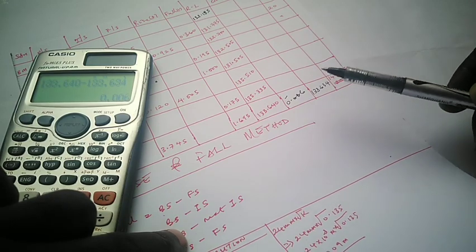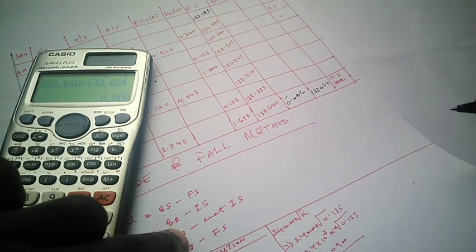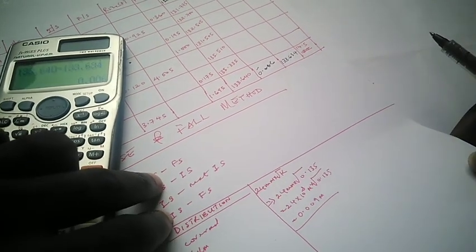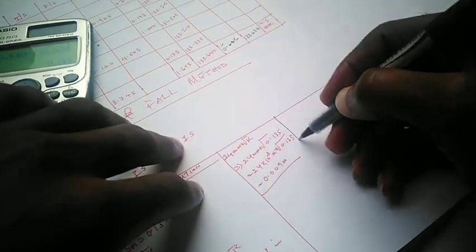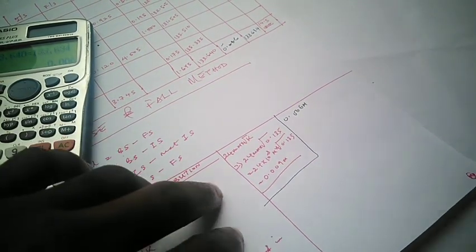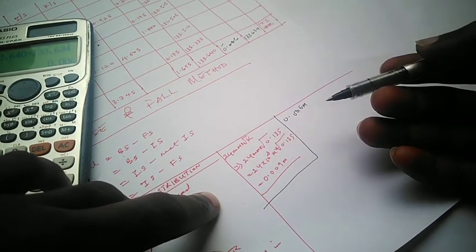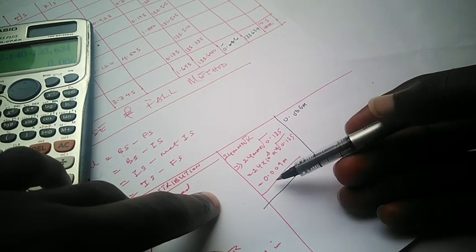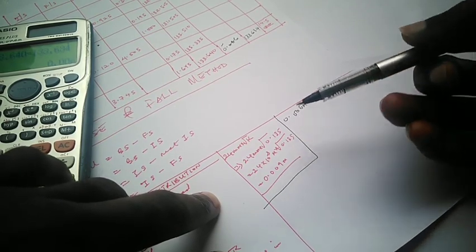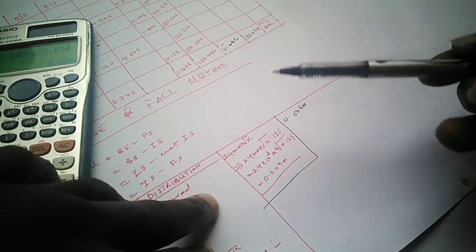Having established that, the next thing is to know how to distribute this misclosure across the stations. We already know our misclosure for this particular leveling exercise is 0.006 meters. The reliable misclosure we are not supposed to exceed is 0.009. Since 0.006 is within 0.009, this particular exercise is acceptable according to the reliable misclosure.